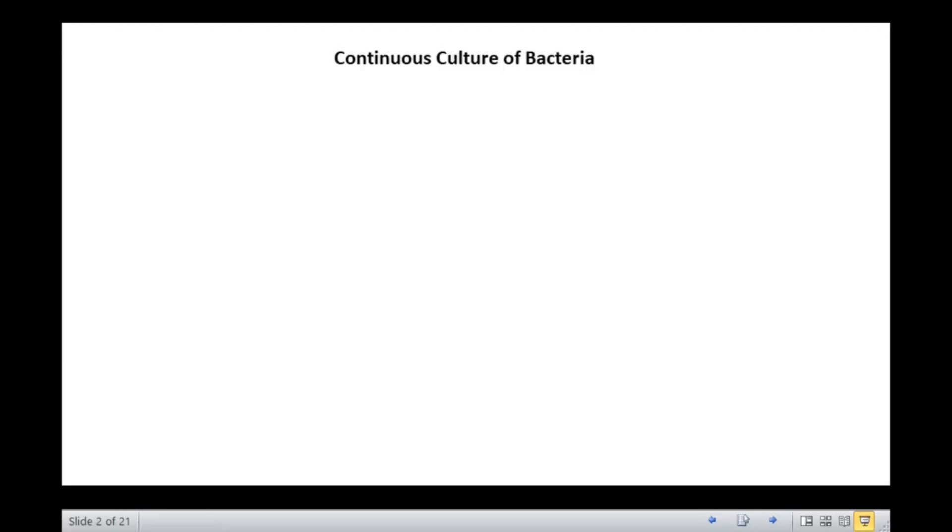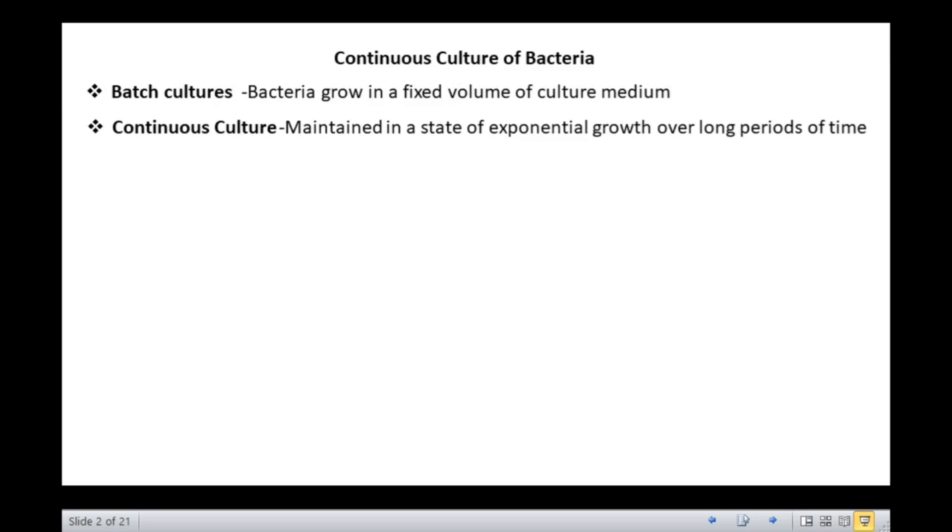The cultures that we have discussed in the previous module for the growth of bacterial populations are called batch cultures, in which bacteria grow in a fixed volume of culture medium. Since the nutrients are not renewed, exponential growth is limited to a few generations. Bacterial cultures can be grown as continuous cultures where they are maintained in a state of exponential growth over long periods of time.